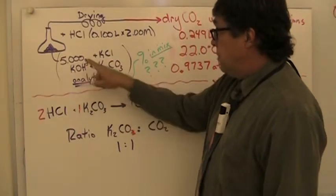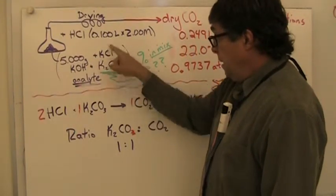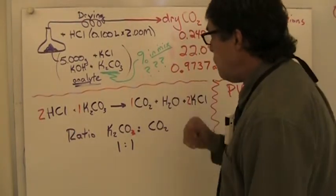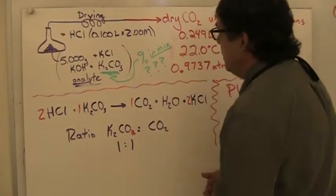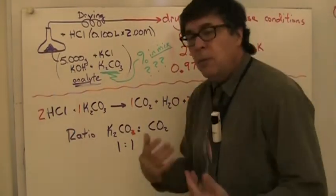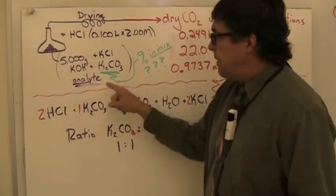We have a 5.000 gram sample that has three potassium salts in it. Part A of this question says what is the percentage of the potassium carbonate, but then we're going to go on to find the percentage of everything else.